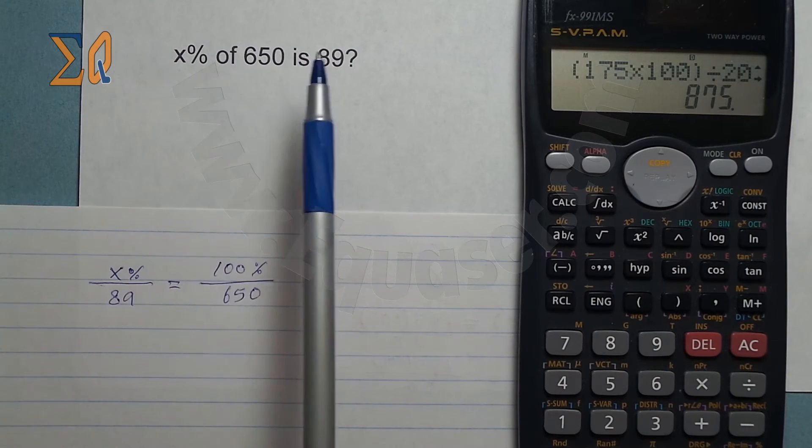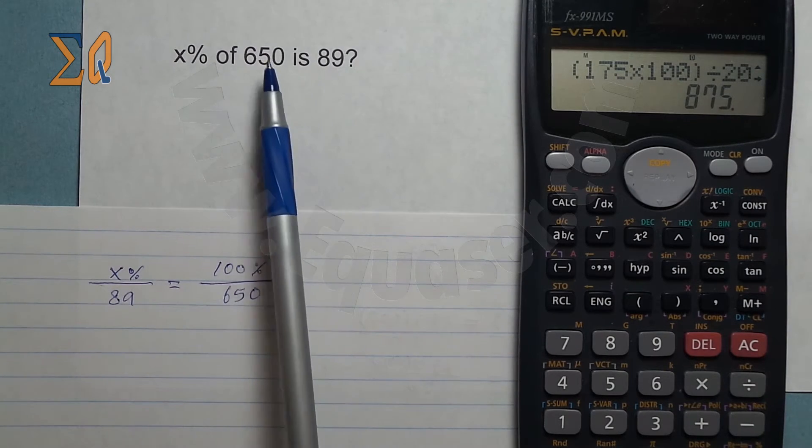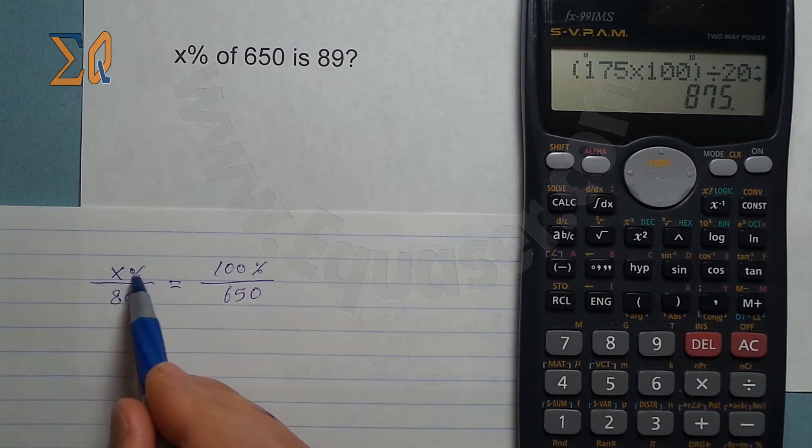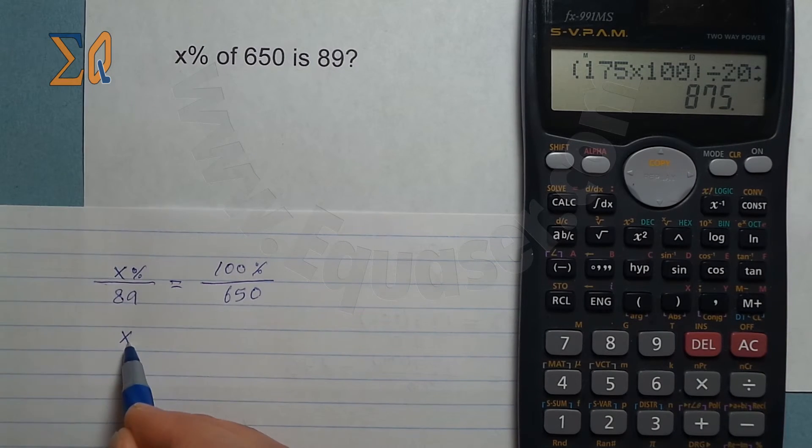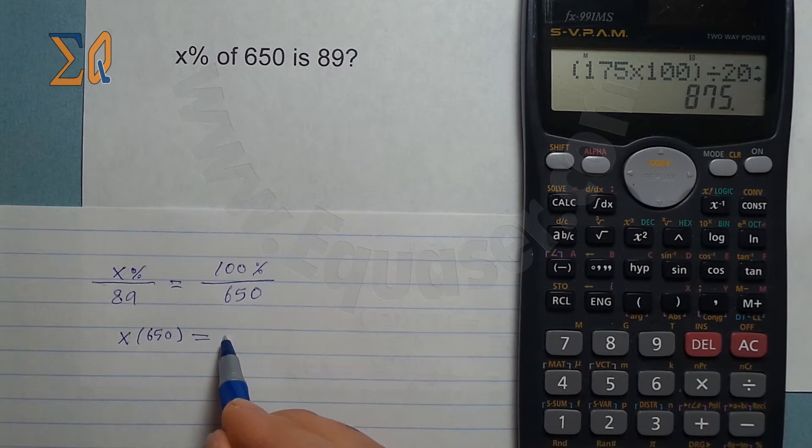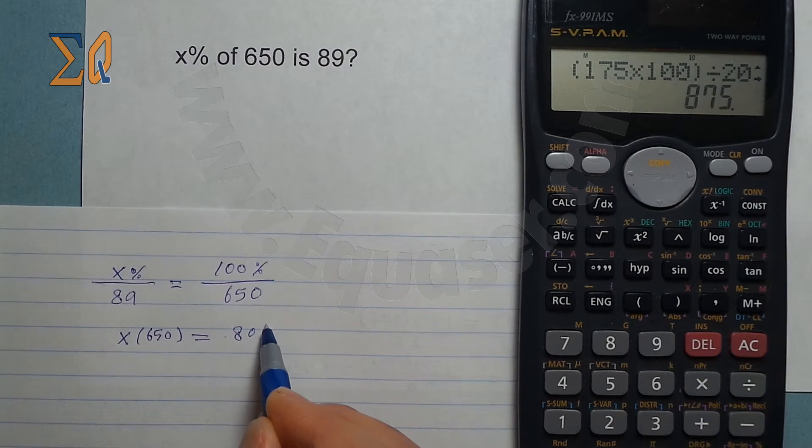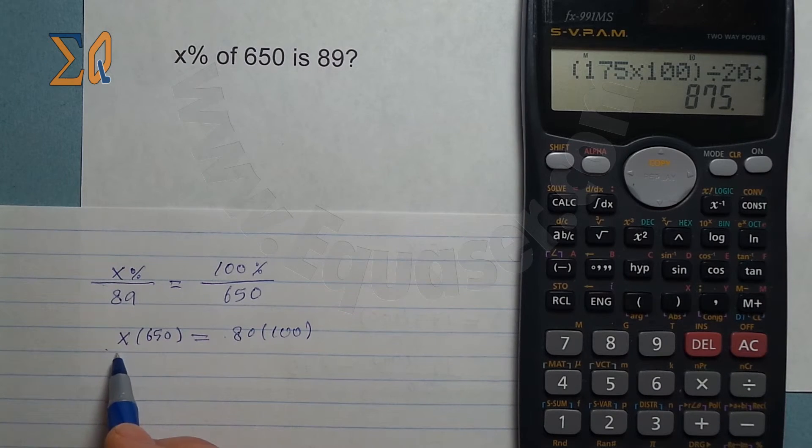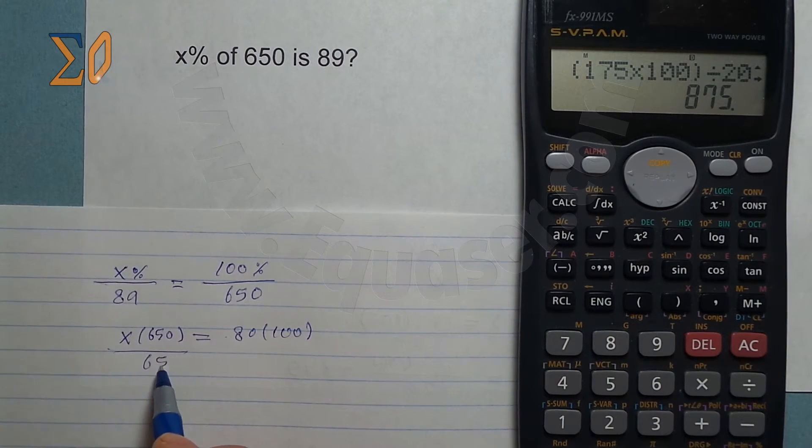Now cross multiplication: X times 650 equals 89 times 100. The same way to isolate X, divide by 650.